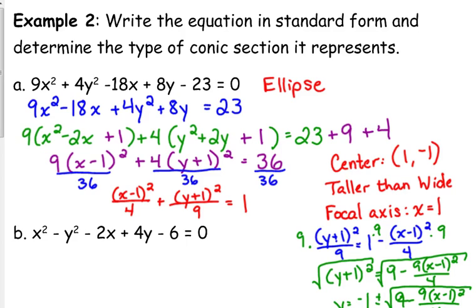We factored out the GCF from the x's, we factored out the GCF from the y's, completed the square. Don't forget that you have the GCF. You have to multiply that number there by the GCF before you add it to the other side. And it was an ellipse because these GCFs here were different numbers for the x and for the y. So it was an ellipse, and we identified that the center was at 1, negative 1.